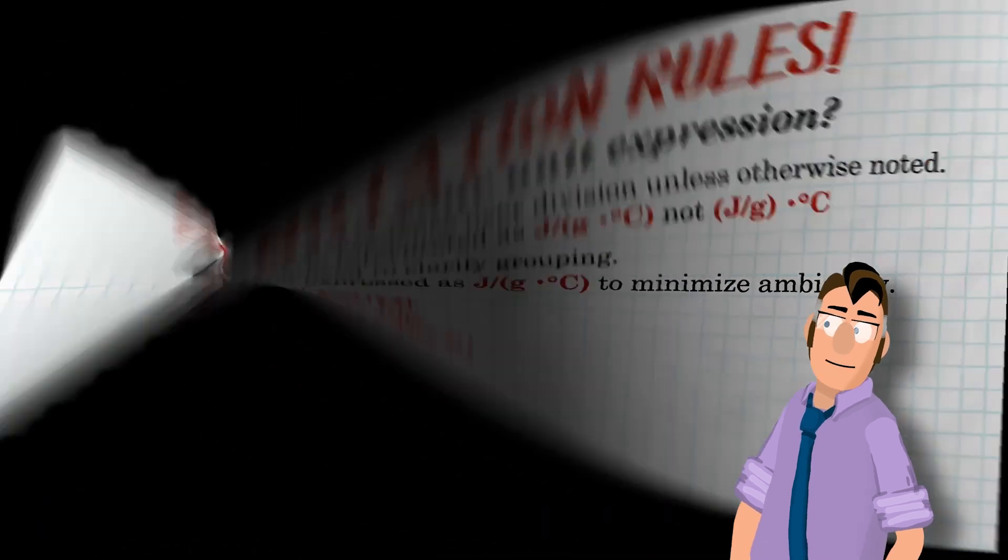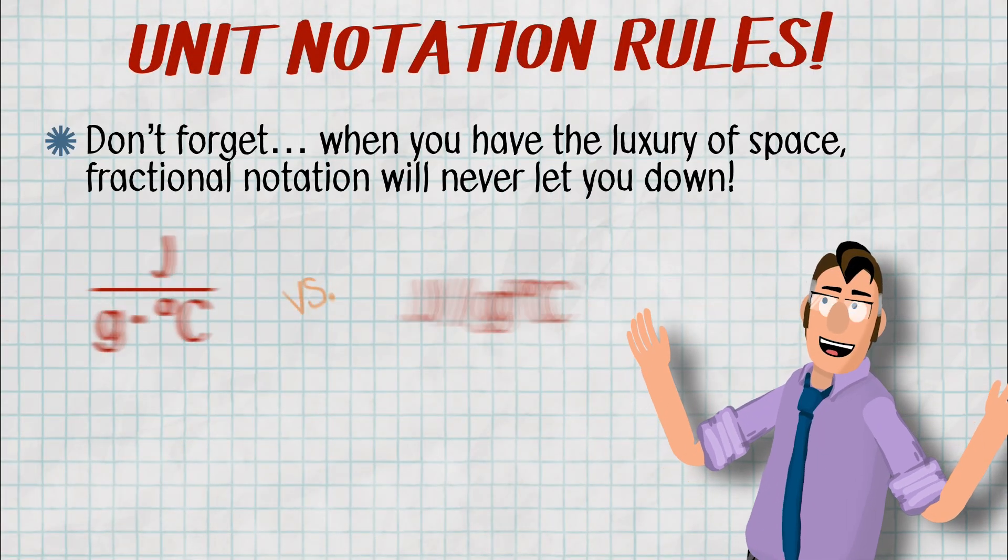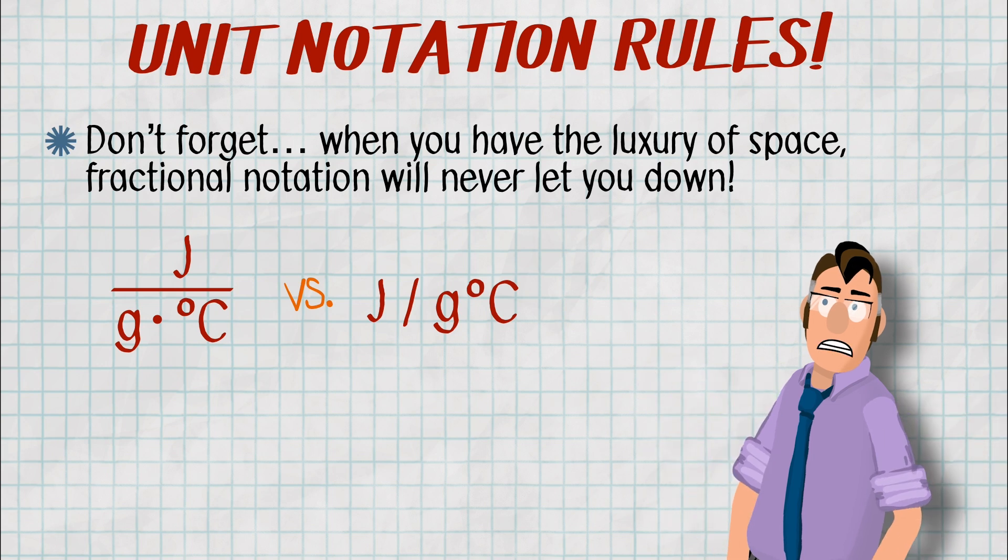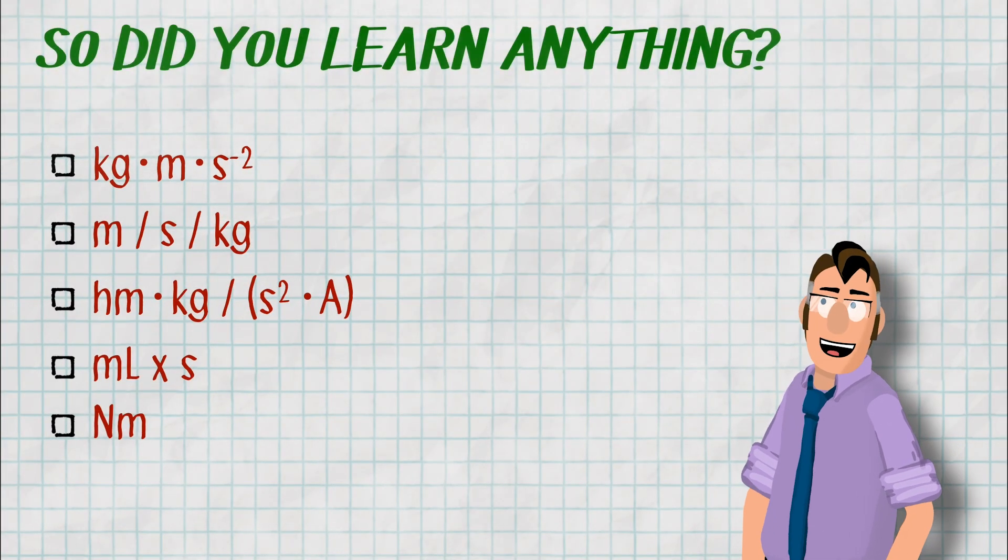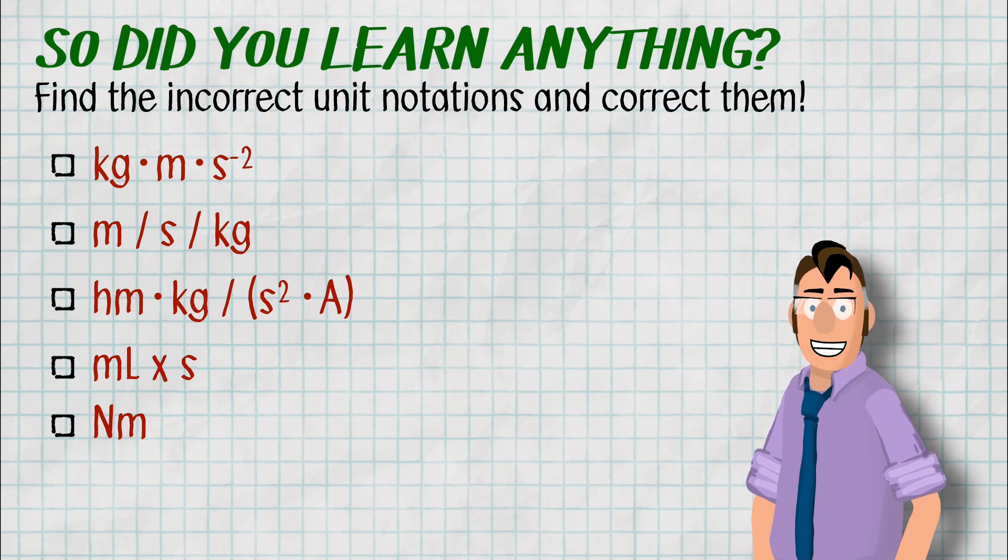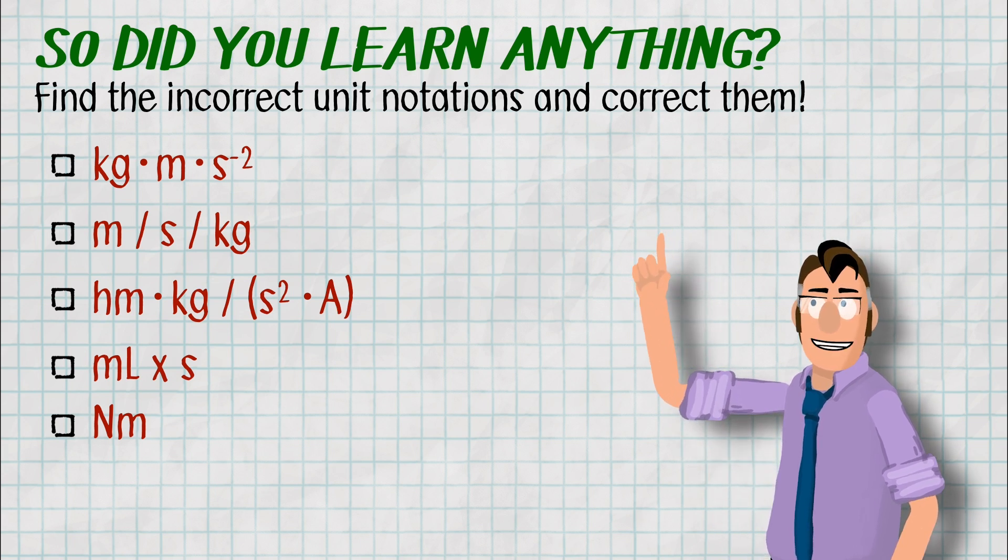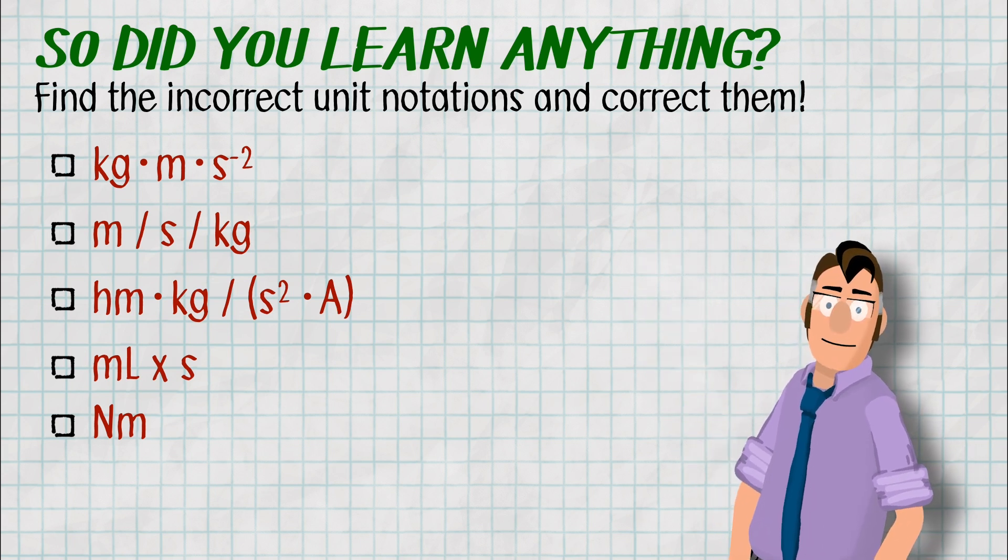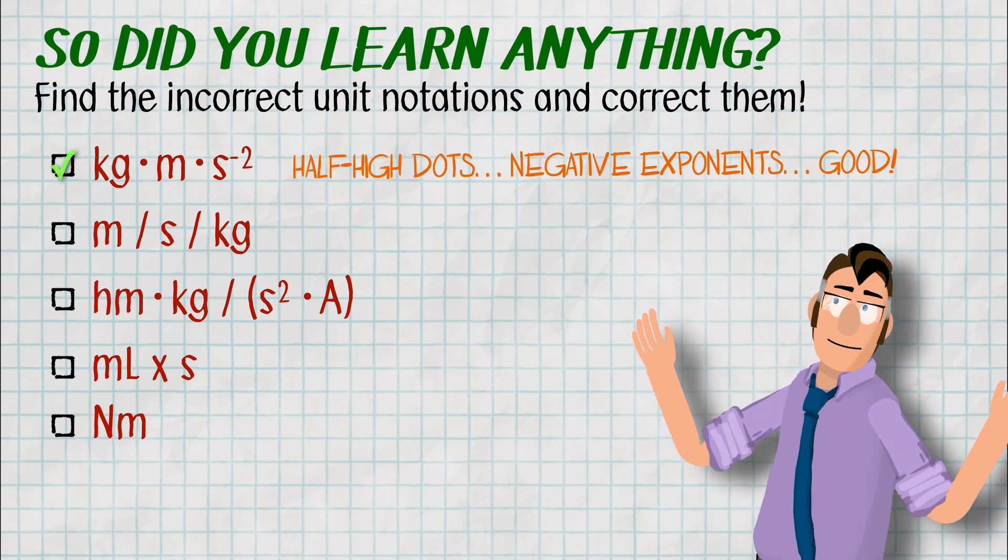So I would rather see it written as the grams times degree Celsius together in parentheses, but you don't have to. And so you should not expect to see those parentheses all the time with units. Remember, when you have the luxury of space, fractional notation takes care of all this stuff. And if you're writing this out on paper, you definitely have enough room. So let's try a couple of problems out. Let's see if you learned anything. Go ahead and pause the video. Okay, welcome back. Let's see if you identified the incorrect unit notations and then corrected them. The first one is fine. We've got half high dots and we've got negative exponents. Perfect.